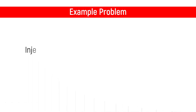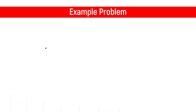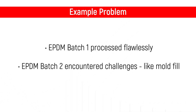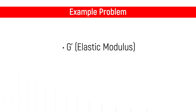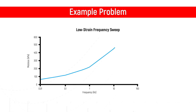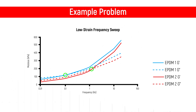Let's use this real-life example. Injection Molder A just received two batches of the same compound from its primary compound supplier. EPDM batch 1 processed flawlessly, while EPDM batch 2 encountered challenges like mold fill. When performing this test method, we need to calculate G' the elastic modulus and G'' the viscous modulus as a function of frequency, and then plot them similar to the graph seen here. Once we have them graphed, we need to determine exactly where these lines cross over with one another. When examining the x-axis, the rule of thumb is that the average molecular weight is greater at the lower end of the frequency at which a crossover point is located. So we can see that compound EPDM 2 had a molecular weight outside the optimal crossover point.